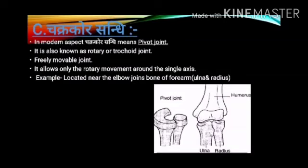Chakra Kora Sandhi: In the modern aspect, Chakra Kora Sandhi means pivot joint. It is also known as a rotary joint. It is a freely movable joint and allows only rotary movement around a single axis. It is located near the elbow joint, at the bones of the forearm i.e. ulna and radius.